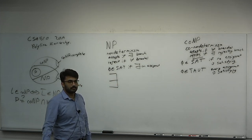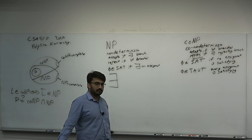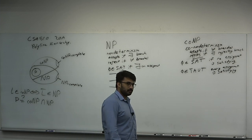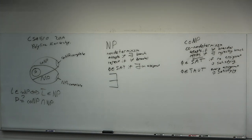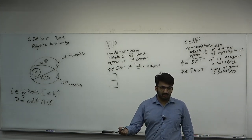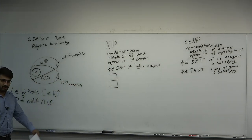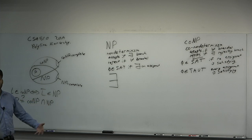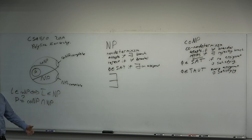Similarly, TAUTOLOGIES is also co-NP-complete, meaning every assignment is satisfying — the entire column is all ones. If you could prove SAT-complement was not in NP, you could prove there is a problem in co-NP and not in NP, and that would be sufficient to prove a very great result. The question of whether NP is closed under complement is still as big of an open problem.